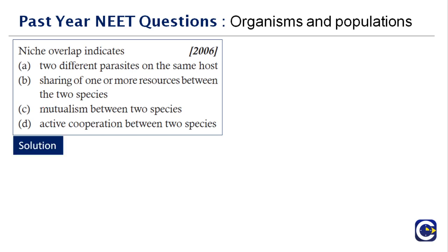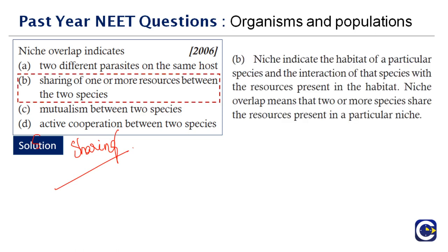Next question: niche overlap indicates — niche refers to the habitat of a particular species and its interactions with resources in that habitat. Niche overlap means two or more species share the resources present in a particular niche. That overlap occurs only when they share resources, therefore the right answer is option B.